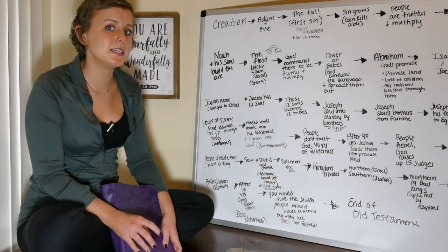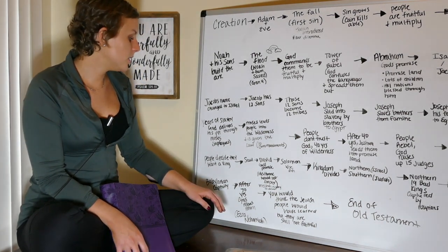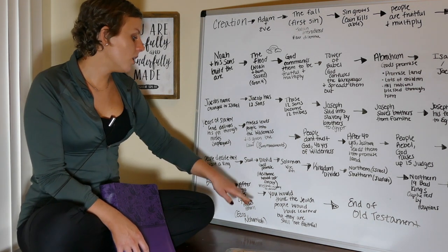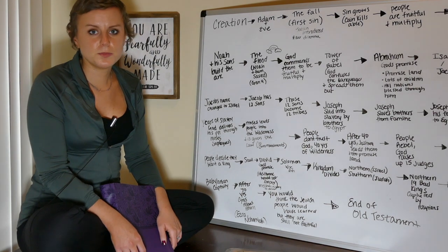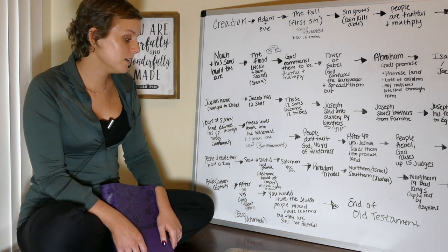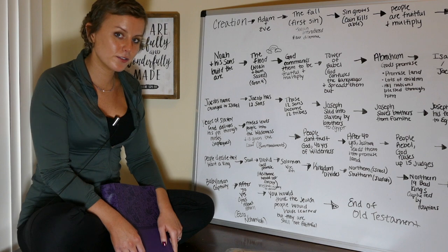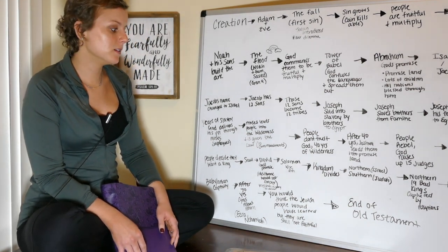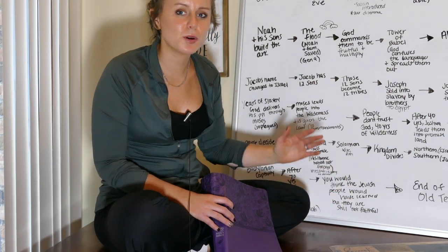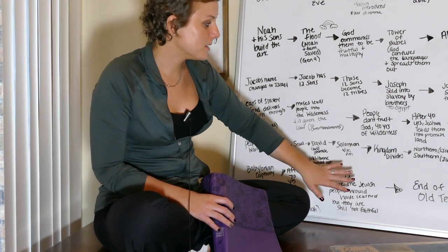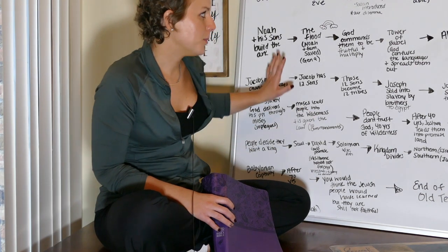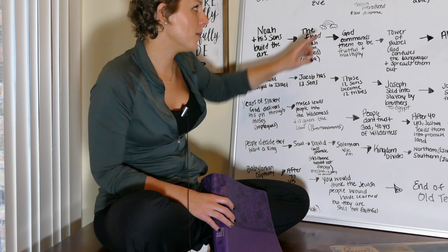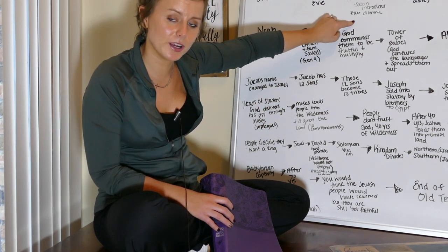They were in captivity for 70 years. But then Cyrus, the king at the time, allows them to return to Jerusalem. After all this time, you would think that the Jewish people would turn back to God and respect him again, and you would think that they learned from the actions, but they didn't. And so the Old Testament ends. The Old Testament would have just ended here. It would have been totally depressing. Because during this time, these people were separated from God, and they were waiting for the coming Messiah to redeem them and fix the problem that sin created with the world.